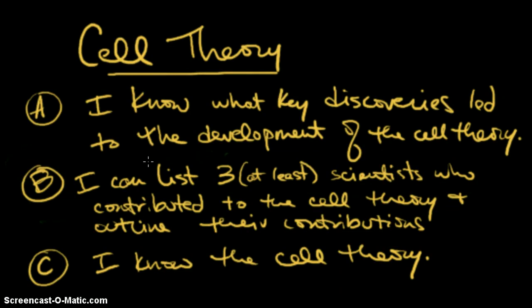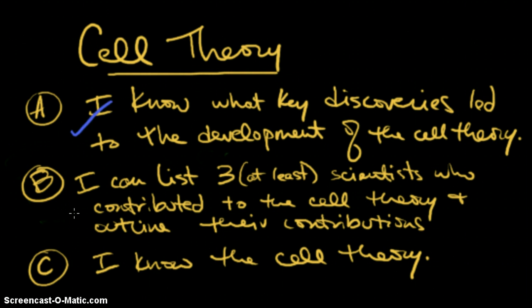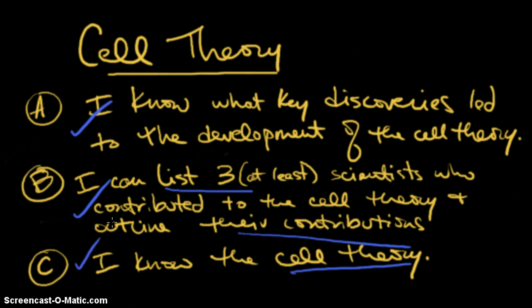We covered that pretty quickly. Going back to our learning targets: do you know what key discoveries led to the development of cell theory? You need to know who the scientists were and, more importantly, what they did. You also need to be able to list three scientists and tell their contributions. And you know the cell theory — you know the three parts to it. If you can put check marks next to those, then you're prepared. If you have questions, jot them down and we can start class by discussing those. Okay, that's all.